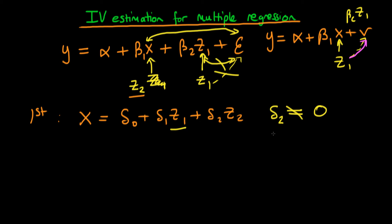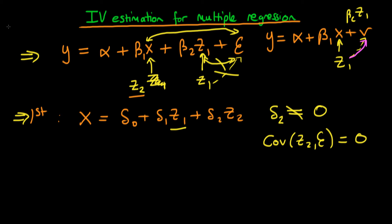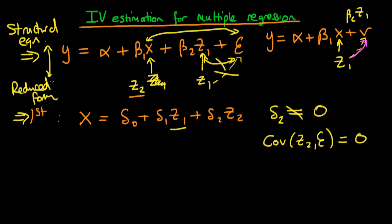So our two conditions on z2 are: delta 2 must be non-zero, and the covariance of z2 with the error term must equal zero. As it turns out, these two equations have names. The original equation of interest is called the structural equation, and the first stage regression we run in an IV situation is called the reduced form equation. These names come from the simultaneous equation model, which we'll discuss in future videos, but they're commonly used when talking about IV estimators.